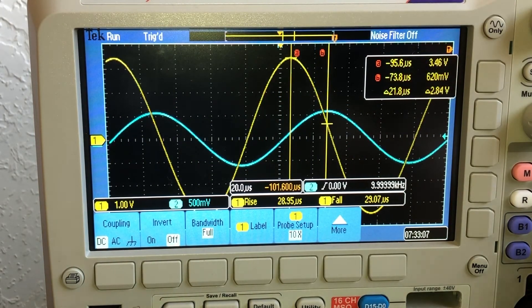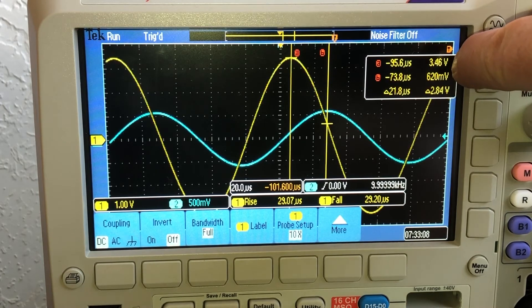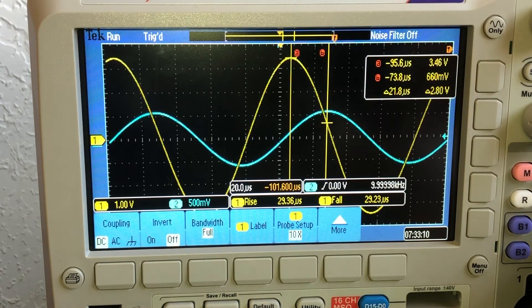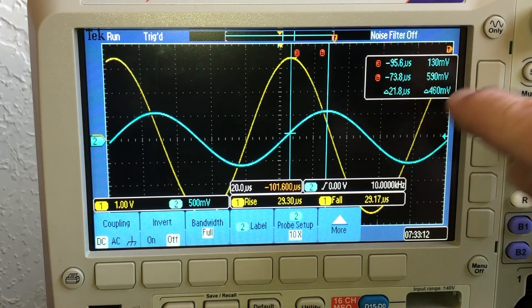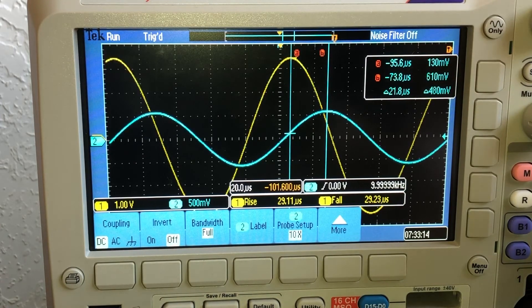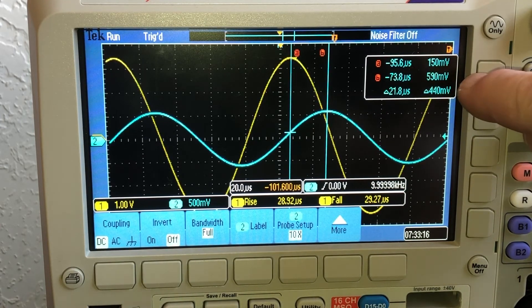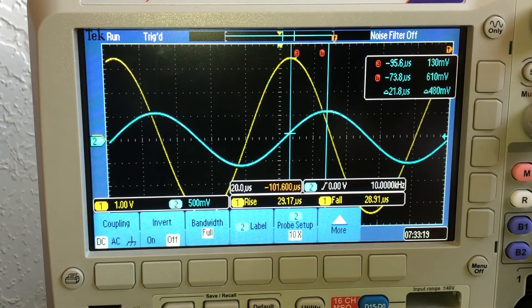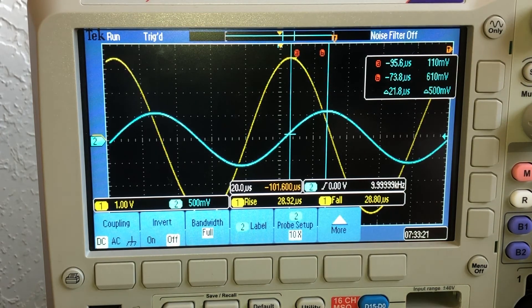Okay, at 10 kHz, got a peak of 3.46 across all three, and then looking at across the resistor is, it's bouncing around, 600 millivolts, 610, 610 millivolts.